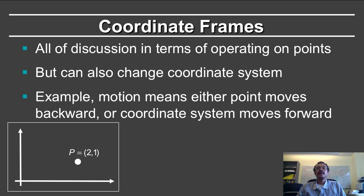For example, if I move towards you, it can be interpreted in two different ways. Either you think of the coordinate system as anchored to yourself, and I'm actually moving towards you. Or you think of the coordinate frame moving backwards, and moving away from me.